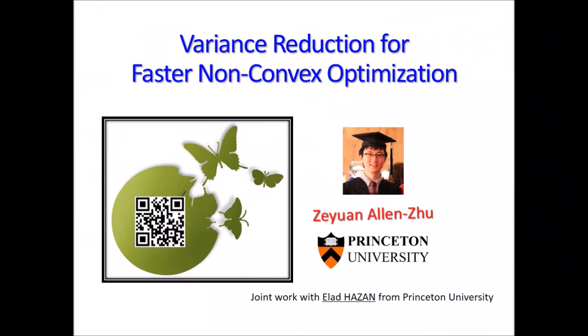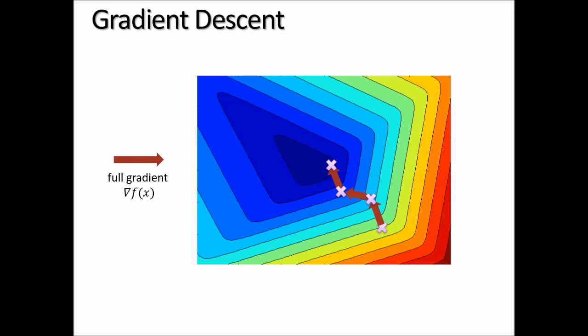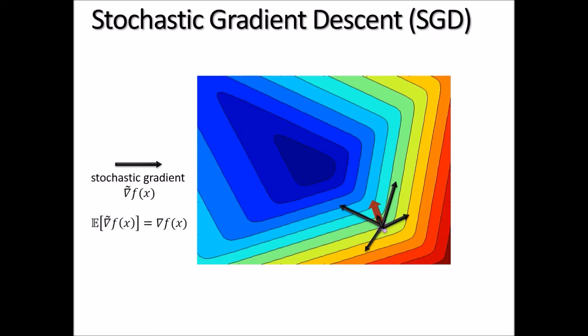Welcome to the second part, joint work with Ila Patten, also from Princeton University. Everyone knows gradient descent — going in the full gradient direction to minimize the objective — and stochastic gradient descent, going in a random direction whose expectation equals the full gradient, which can be n times cheaper. That is a repetition from the first part. Now comes something different: in the second part I want to focus on the totally non-convex problem, with no convexity assumption whatsoever.